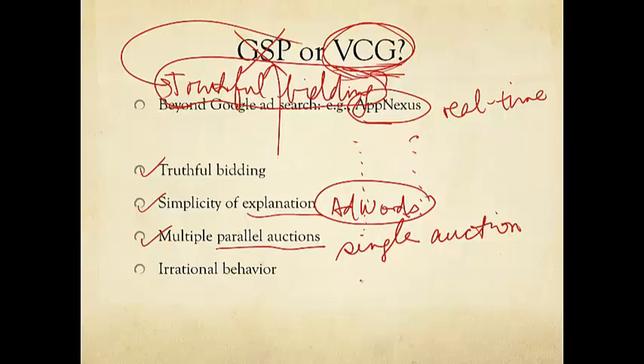In online ad auctioning, there are many auctions going on at the same time. Indeed, if I have a burger advertisement, there are many people searching for hamburgers on Google's website at the same time. So, with the simultaneous auctions going on at the same time, the picture becomes much murkier. It's not exactly clear why GSP or VCG is necessarily better than the other.